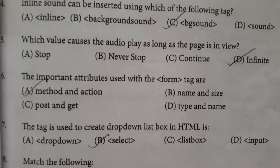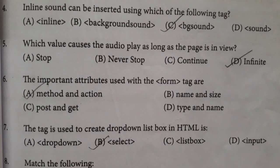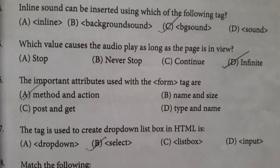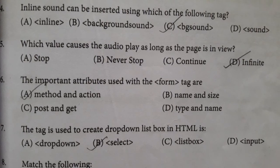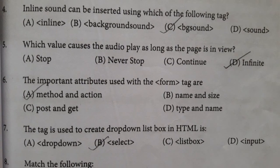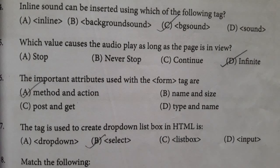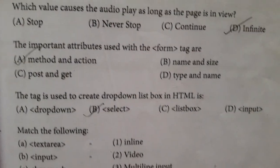Question number 6. The important attributes used with the form tag are Option A method and action, Option B name and size, Option C post and get, Option D type and name. Answer is Option A, method and action.